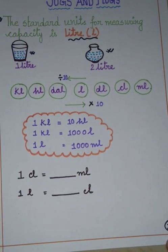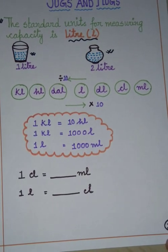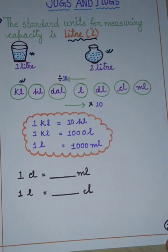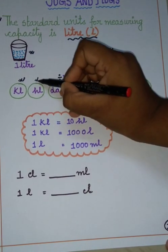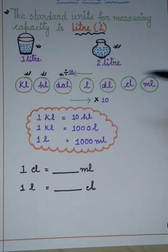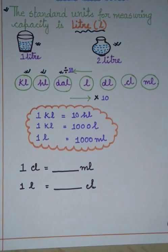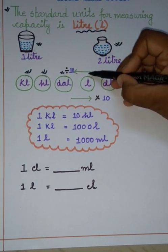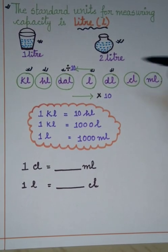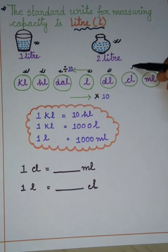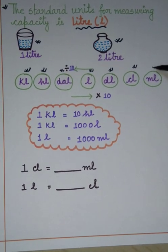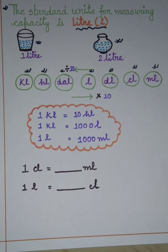Along with liter, there are more units: KL means kilolitre, HL means hectolitre, DAL means decolitre, then L means liter, then DL means decilitre, then CL means centilitre, and then ML means millilitre.